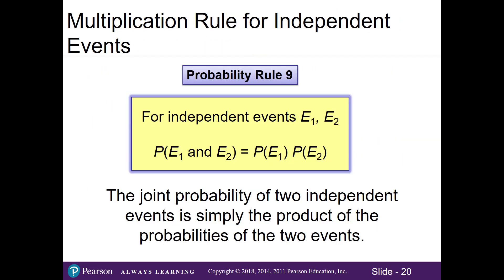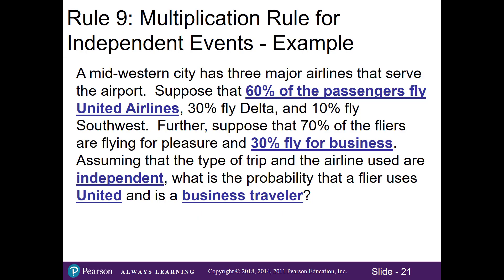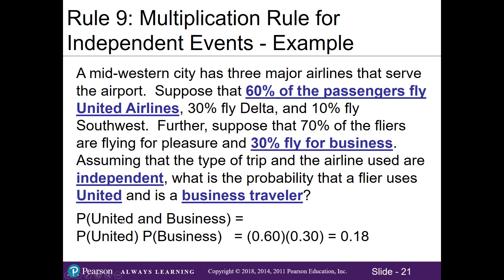The multiplication rule for independent events is rule number 9 — when events are independent, we simply multiply them. In a midwestern city, 60% of passengers fly United, 30% fly Delta, and 10% fly Southwest. 70% fly for pleasure and 30% fly for business. Assuming airline and trip type are independent, the probability that a flyer uses United and is a business traveler is 0.6 times 0.3, which equals 0.18 or 18%.